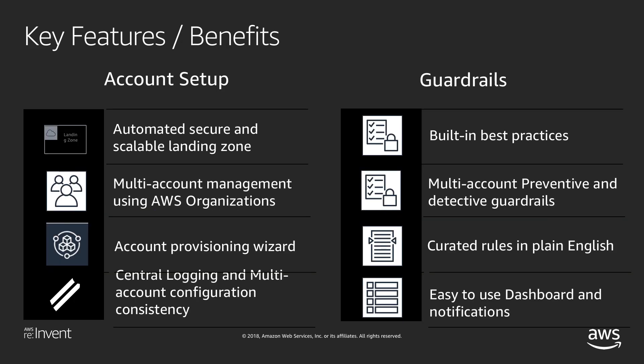We push these best practice guardrail policies down, and then we create a dashboard of your multi-account managed environment so you can see the status of settings and activity in sub-accounts managed through the Control Tower service. Features include the landing zone, managing multiple accounts with AWS Organizations, an account provisioning wizard — almost like an account vending machine — central logging, configuration consistency, and guardrails to enforce best practices.